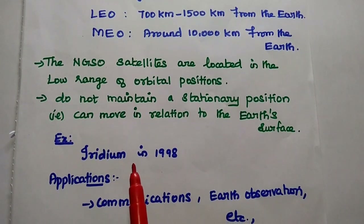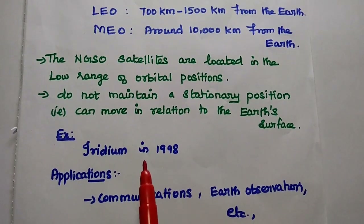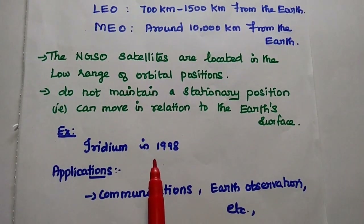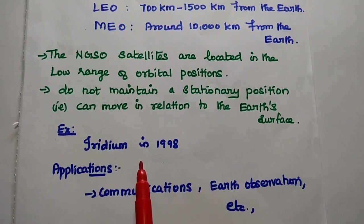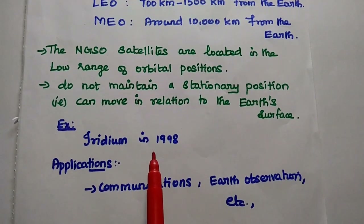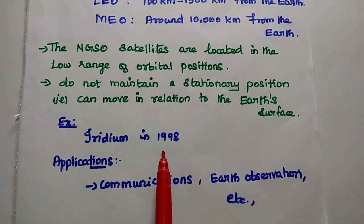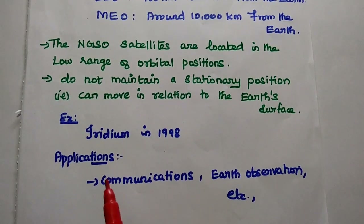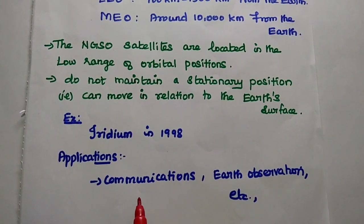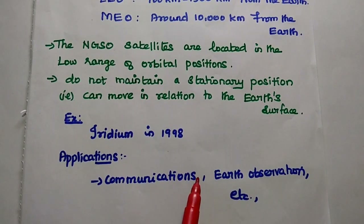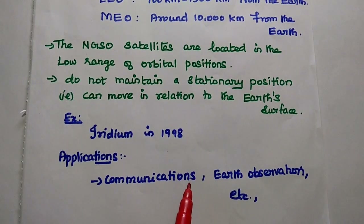Examples of non-geostationary orbit satellites include Iridium and Globalstar. Applications include communications, earth observations, and logistics.